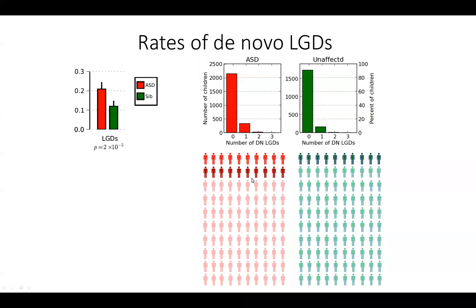Moreover, if you find a de novo LGD in an affected kid, there is a 50% chance it is one of those random mutations with nothing to do with autism, but with 50% probability it is a causal de novo LGD. So every de novo LGD in an affected child has about a 50% probability of being causal. This is the framework we apply to study every type of de novo mutation — copy number variants, missense mutations, and non-coding variants.